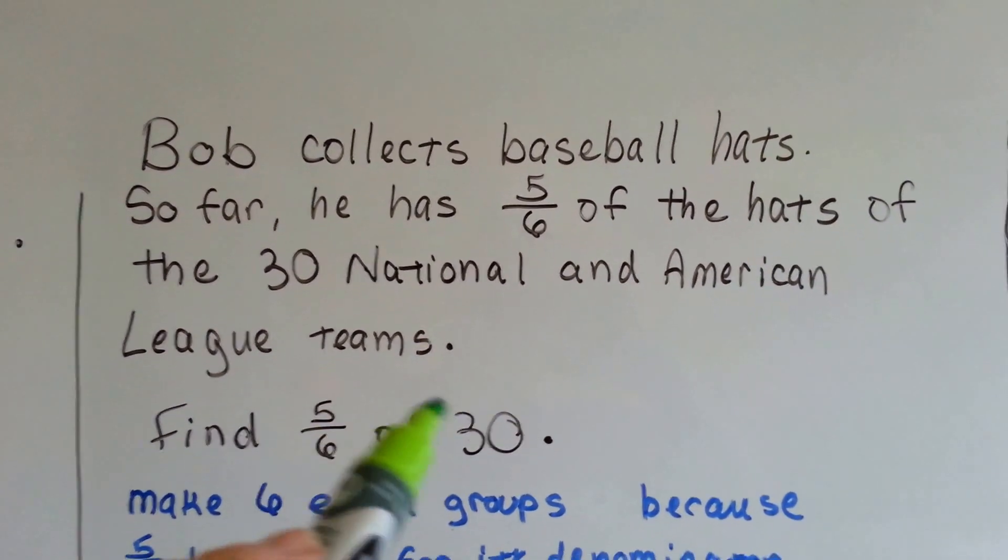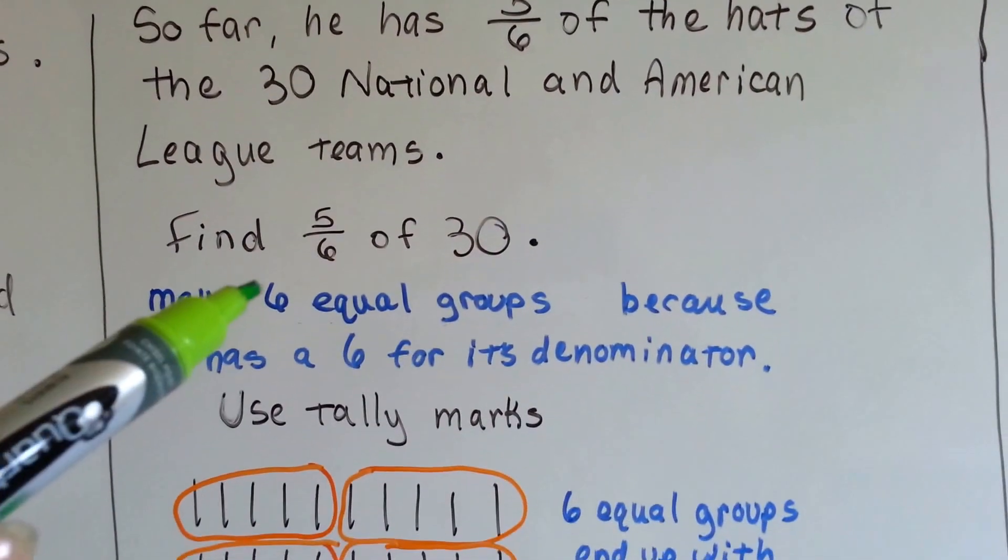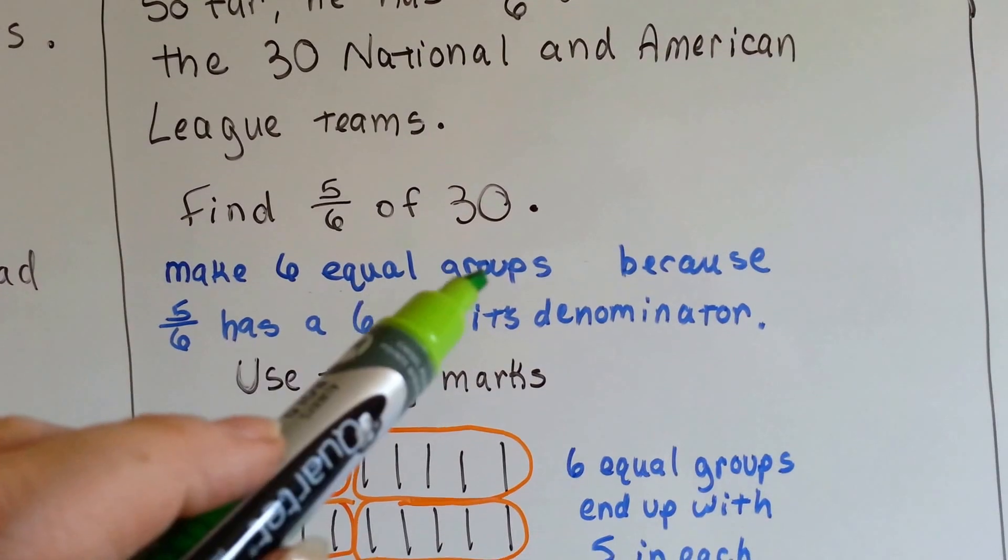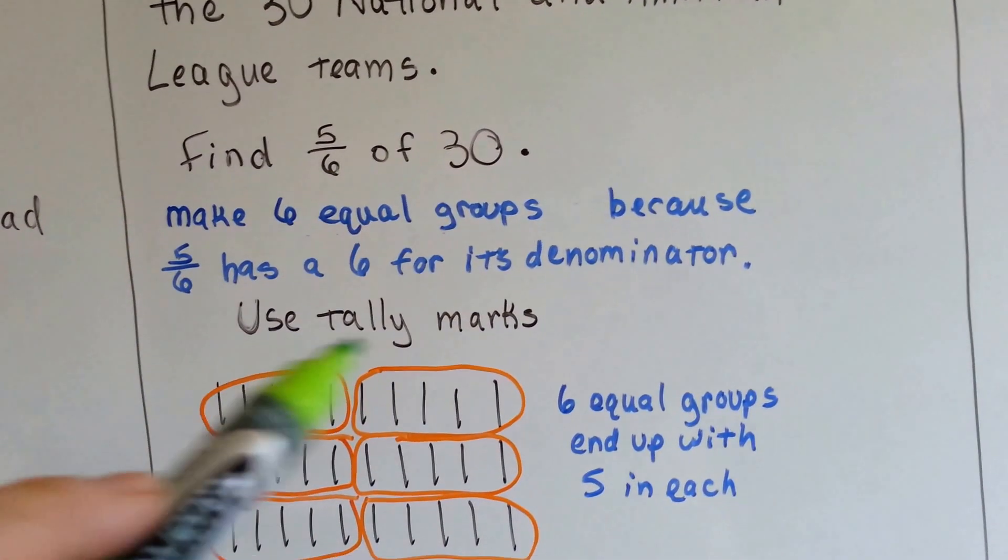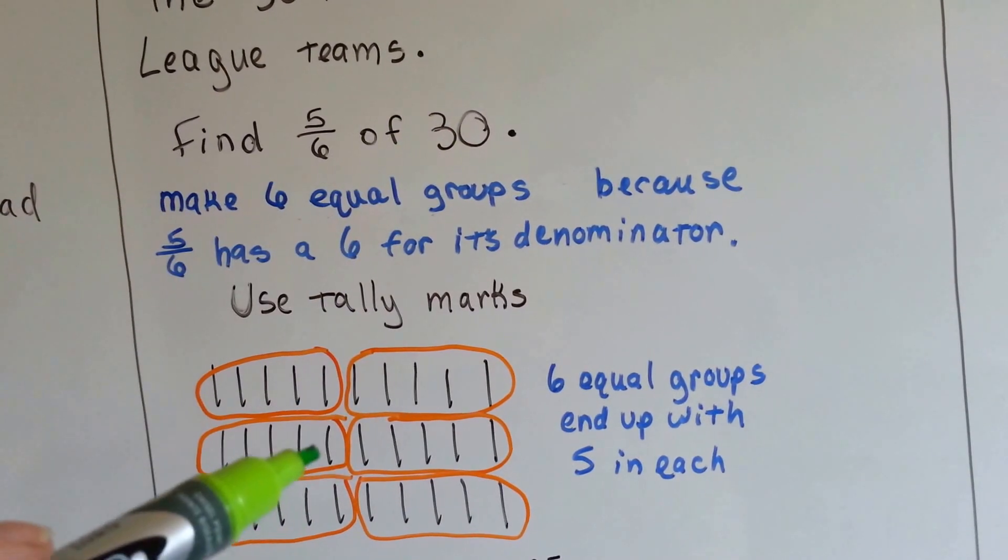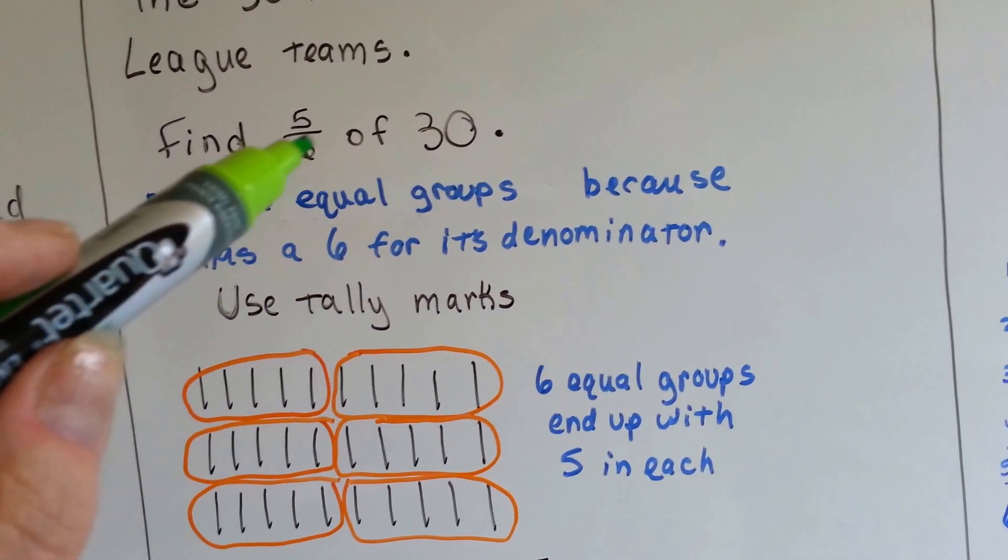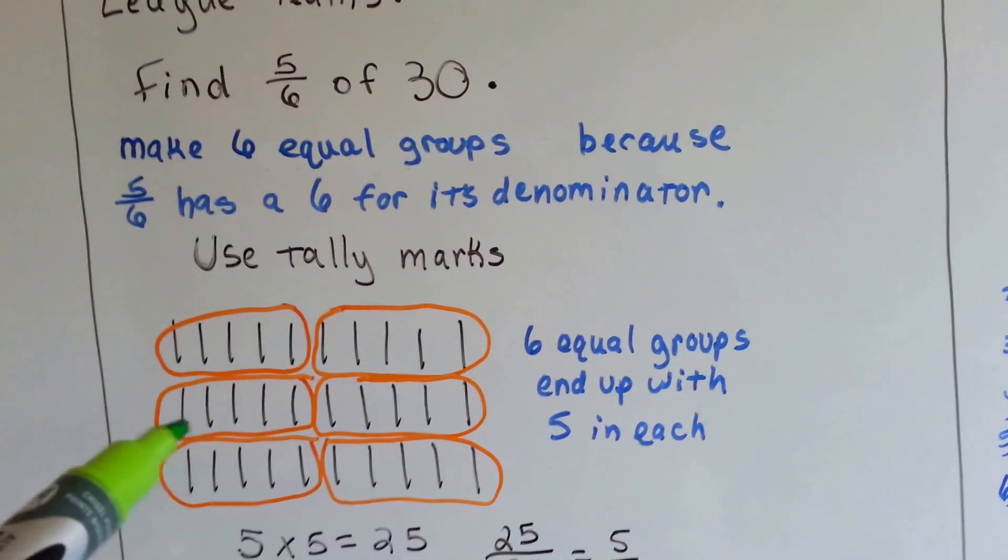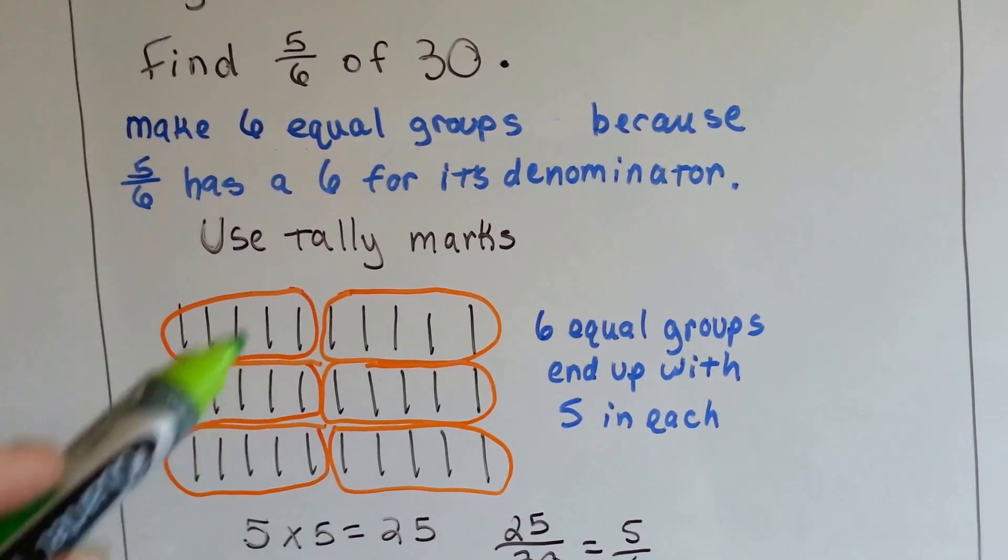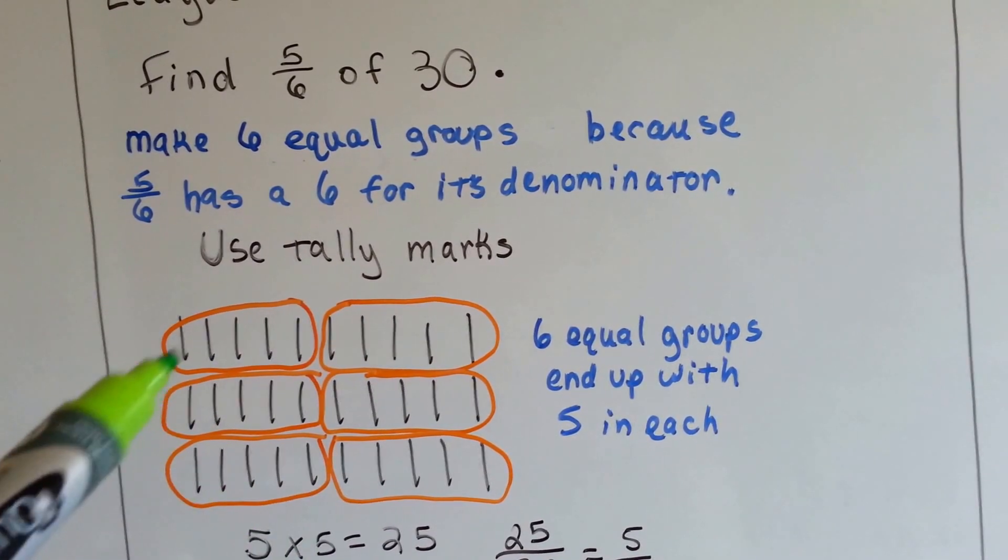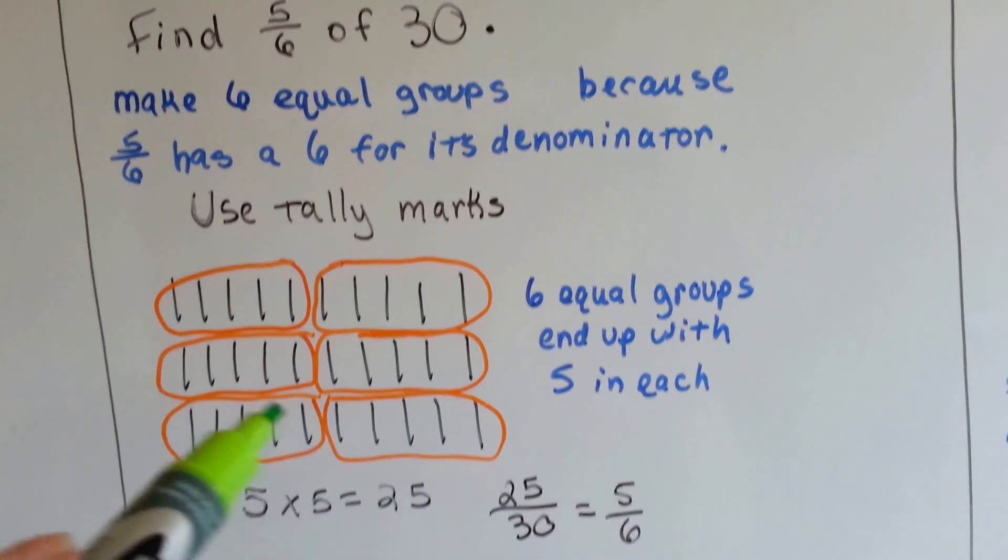So we need to find five-sixths of 30. Because our denominator is a 6, we're going to make 6 equal groups, and we're going to use tally marks to represent the hats, and we're going to draw 30 tally marks. Then we're going to circle and make 6 equal groups. Well, we found out that when we drew 30 tally marks to represent the hats, to make 6 equal groups, there were 5 in each group.